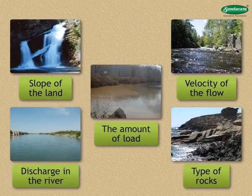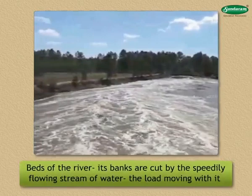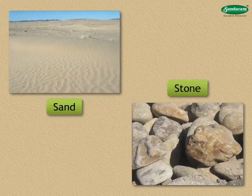Let us see how erosion is carried on by a river. The beds of the river as well as its banks are cut by the speedily flowing stream of water as well as the load moving with it. Moreover, the sand, stone, etc. in the flow also break as they collide.